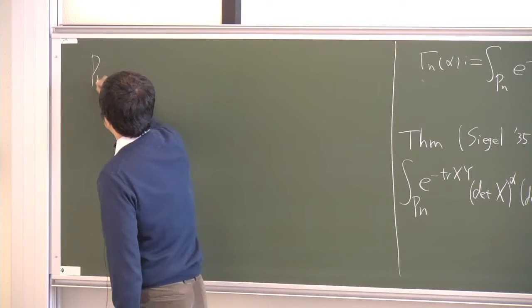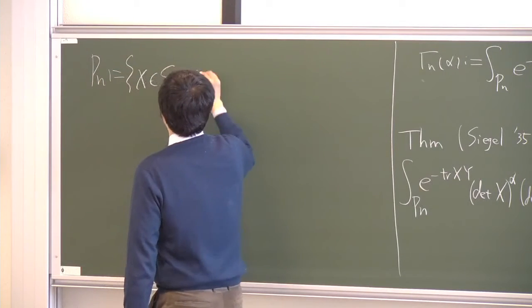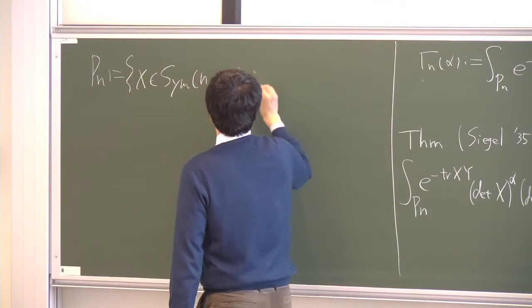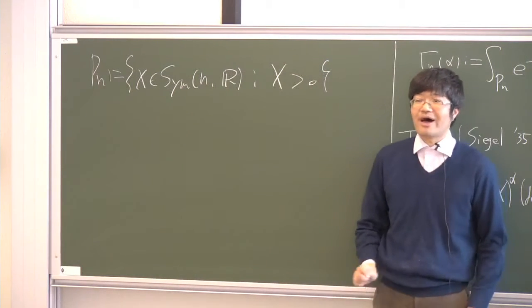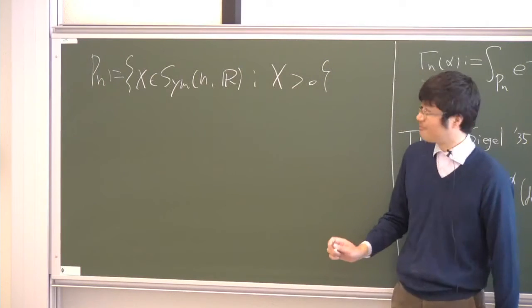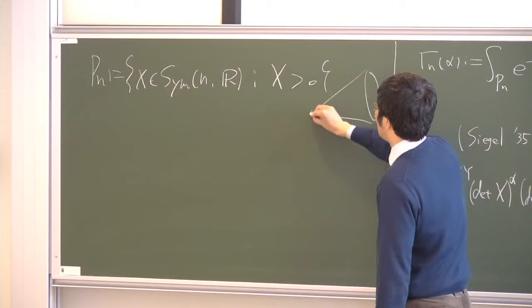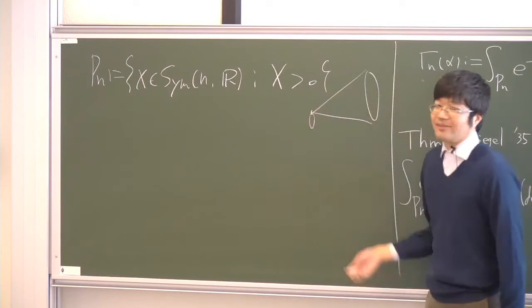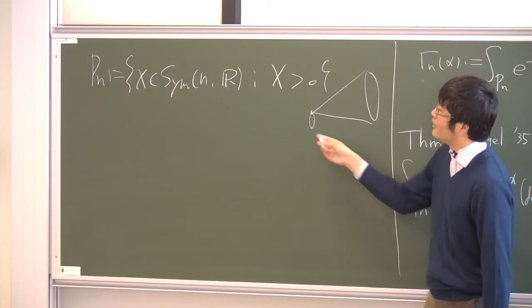I write P_n, the set of real symmetric matrices of size n, which is positive definite. The positive definite means all eigenvalues of X are positive. This set of P_n forms an open convex cone pointed at the origin in the vector space of symmetric matrices.